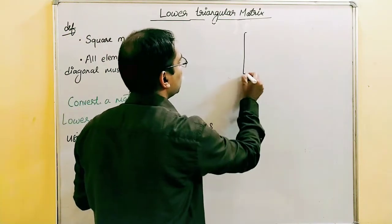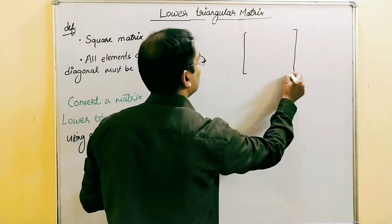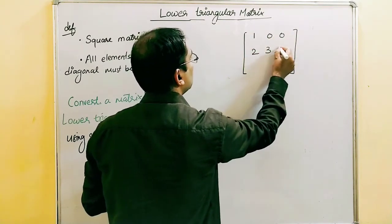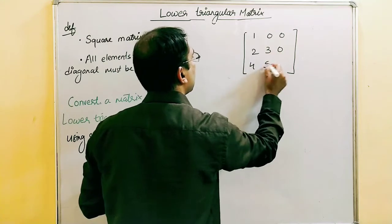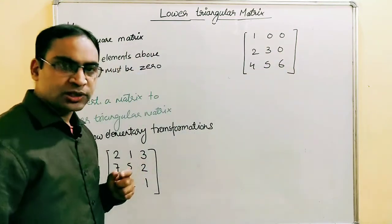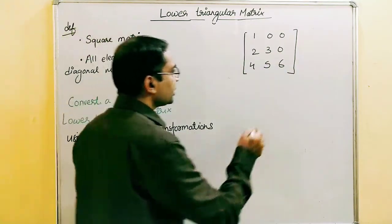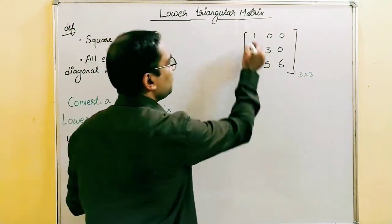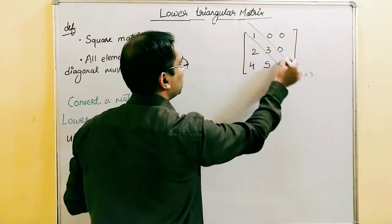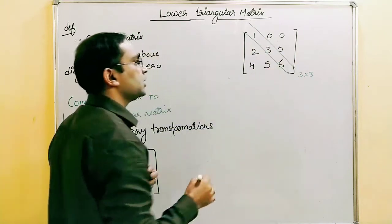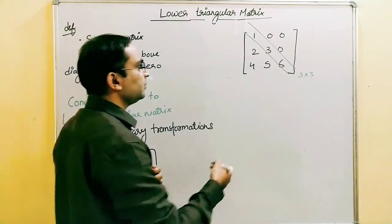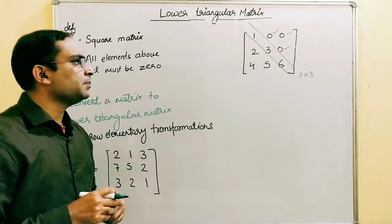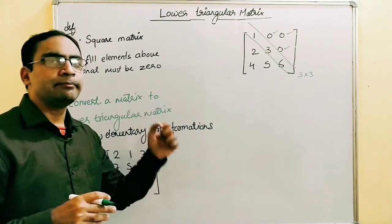For example, consider the matrix with elements 1, 0, 0 in the first row; 2, 3, 0 in the second row; and 4, 5, 6 in the third row. This is a square 3x3 matrix, and we can see that all elements above the diagonal are zero. So this is an example of a lower triangular matrix.